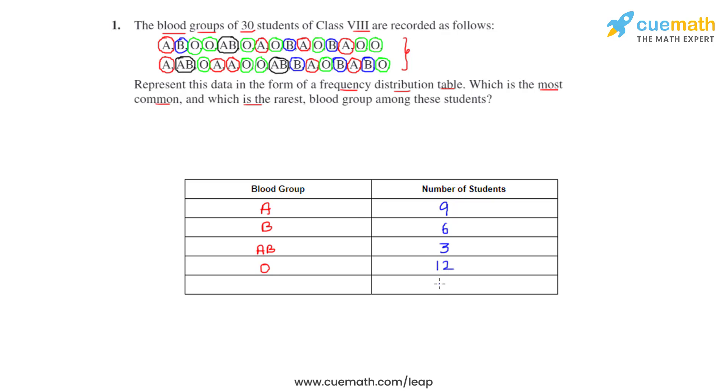So now if we sum these numbers we get a total of 30 which tells us that we have not missed any of the students.